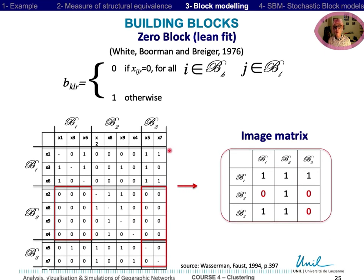The 0 block criteria defines a relation 0 between 2 positions only if there are absolutely no relations between individuals of these 2 positions.